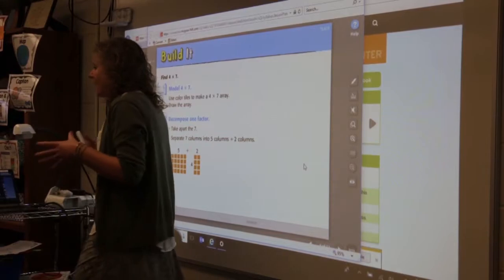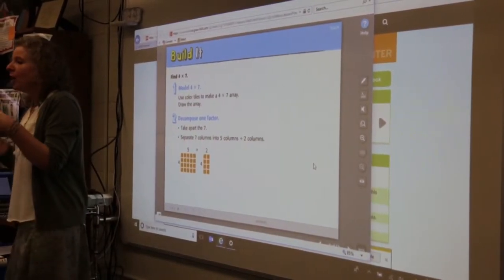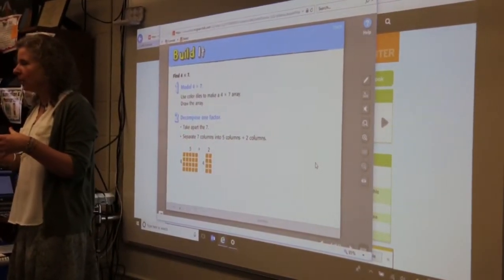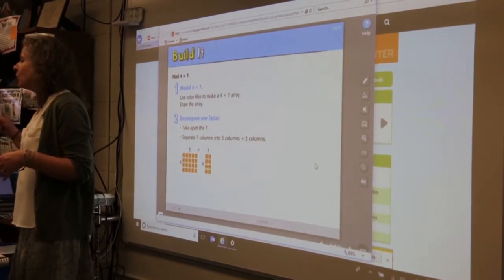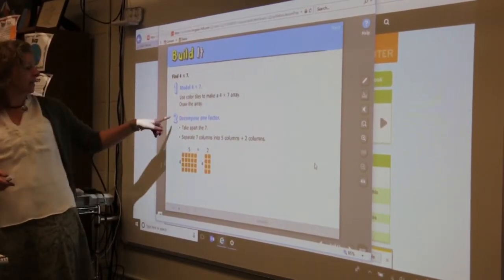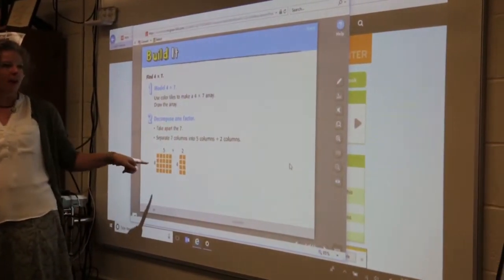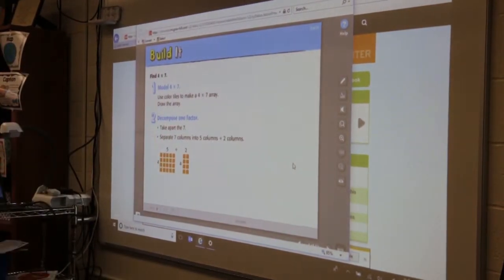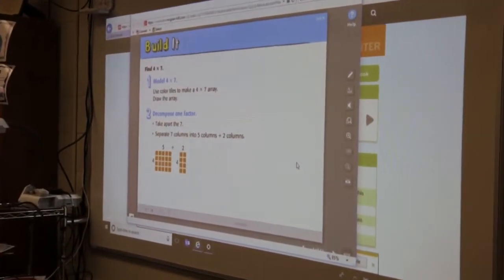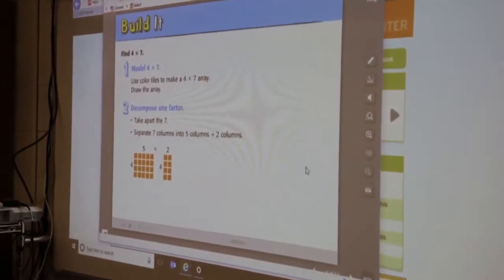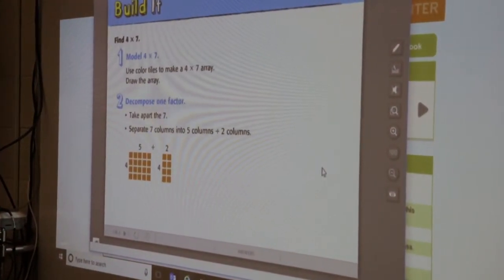Today we're going to be talking about how to break down models in order to multiply. So what I want you to do is take a peek at the model that they have up here. It's four times seven. Now what's the easiest way for you to figure out four times seven?